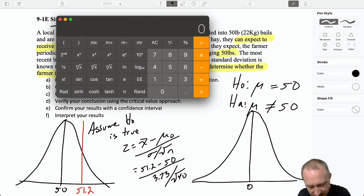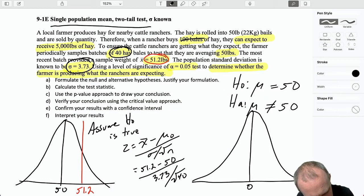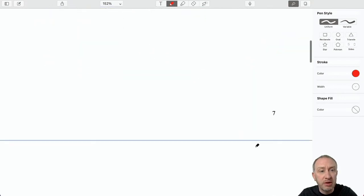Now, if I pull up my calculator, 51.2 minus 50 divided by 3.73 over root 40. So that gives me a test statistic of 2.03. Let's go like this. So that's out here somewhere. 2.03. So again, p-value approach, critical value approach. P-value approach, I look up my test statistic 2.03. We're still using the Z distribution. So here I'm going to scroll down to my Z tables.